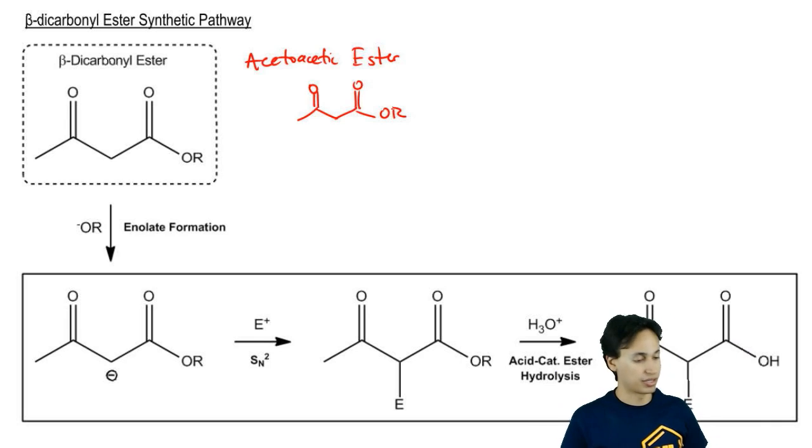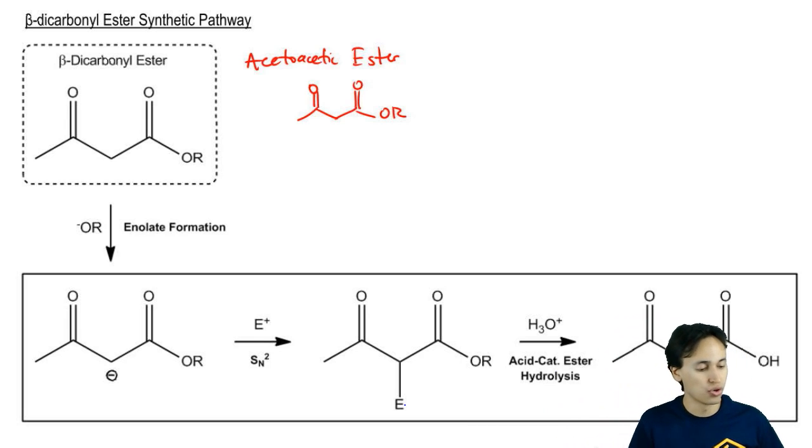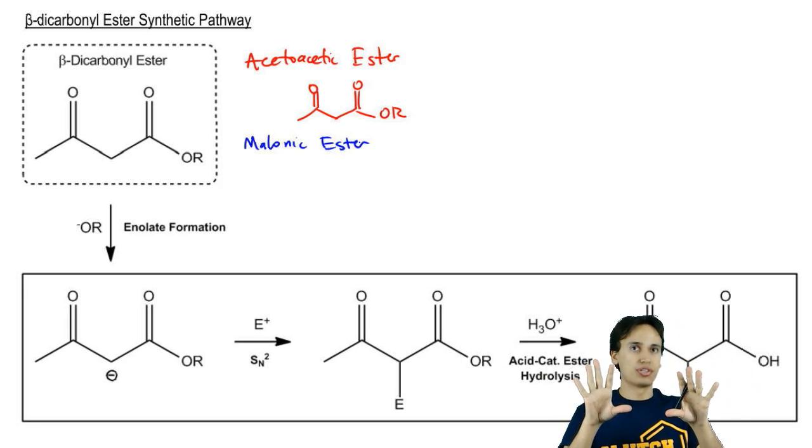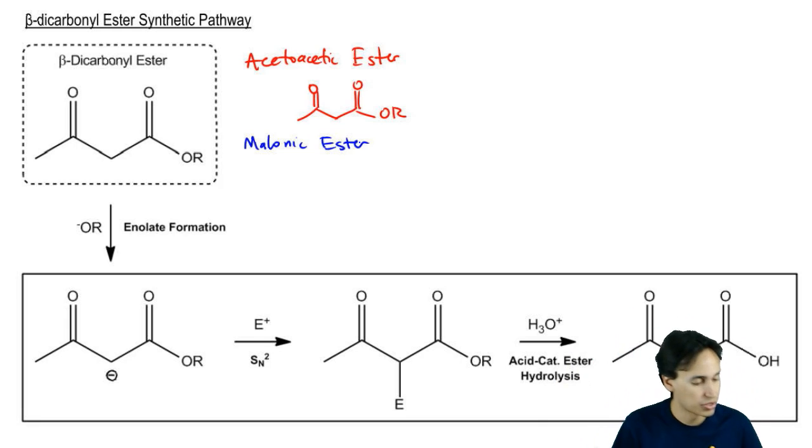Then there's also malonic ester. Malonic is the name for three-carbon diacid, so it's a three-carbon chain of two carboxylic acids. Malonic ester is just two esters on both sides.